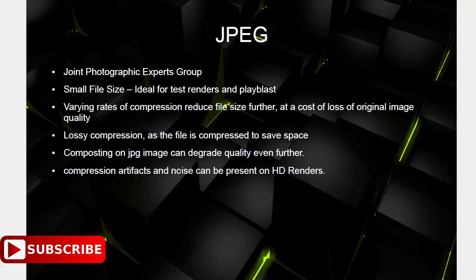File format number five: JPEG — Joint Photographic Experts Group. JPEG has a very small file size and is ideal for test renders and playblasts. If you want to render 15 versions of a simulation or test animation, or make hundreds of playblasts, there's no need to use TIFF or EXR because you'd use a lot of disk space. Use JPEG just to check how your scene or simulation is progressing, then switch to EXR or TIFF once you're happy.